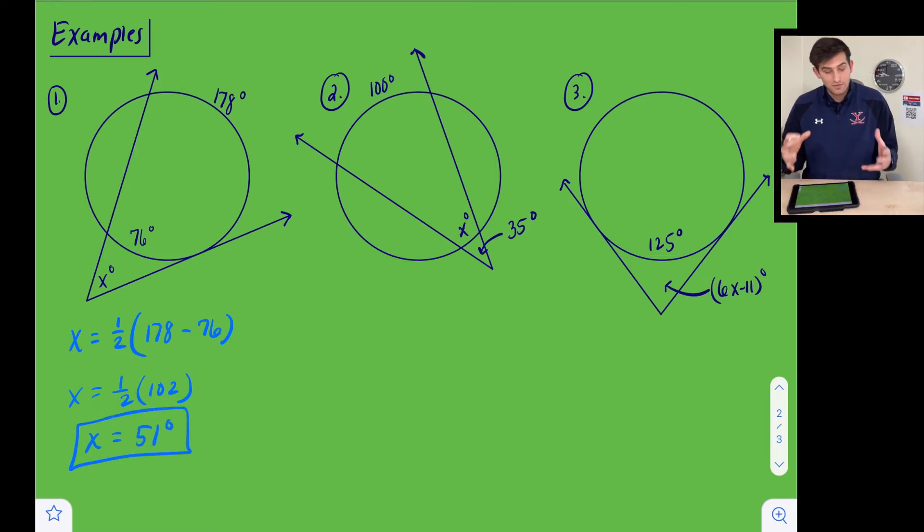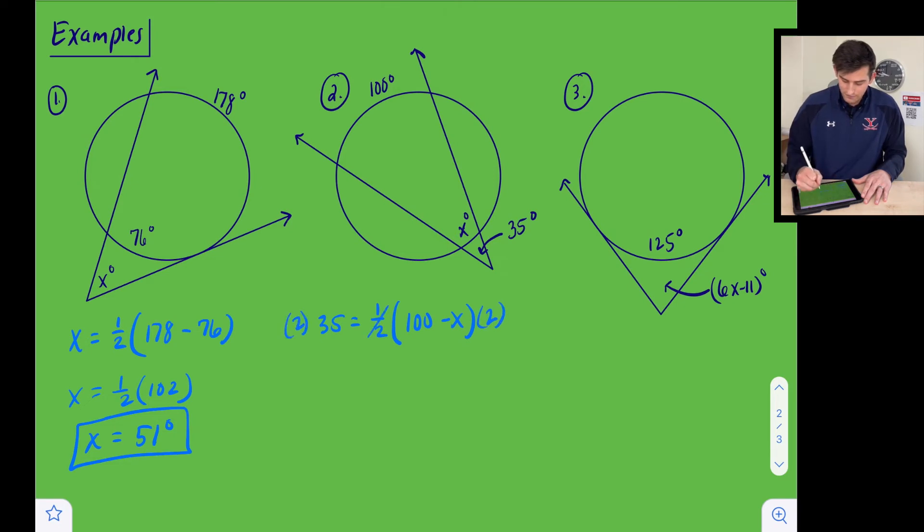All right, now number two, we want to find the measure of one of these intercepted arcs. So we know the degree measure already is 35 for our angle. So 35 is equal to one half, and it is 100 minus X. So now we just want to solve for X. So let's multiply both sides of this by two, because that's going to get rid of our one half. So now we have 70 is equal to 100 minus X. Let's subtract 100. So we get negative 30 is equal to negative X. So if we divide by negative one there, we get X is equal to 30 degrees.